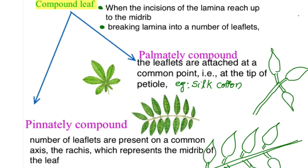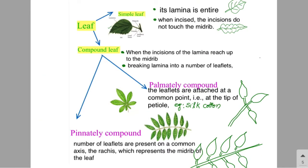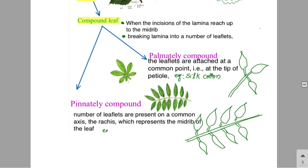Two types of leaves are simple leaf and compound leaf. In a simple leaf, the complete lamina is entire or if incised, the incision does not touch the midrib. In compound leaf, the incision reaches up to the midrib and lamina breaks into leaflets. Palmately compound leaf example: silk cotton. Pinnately compound leaf examples: neem, tamarind, rose, and pea.